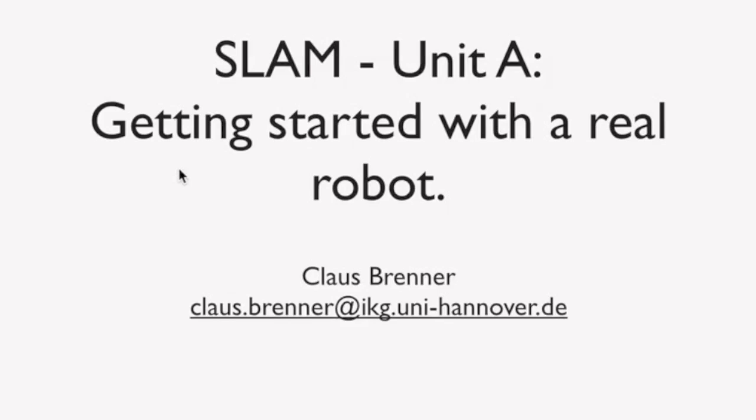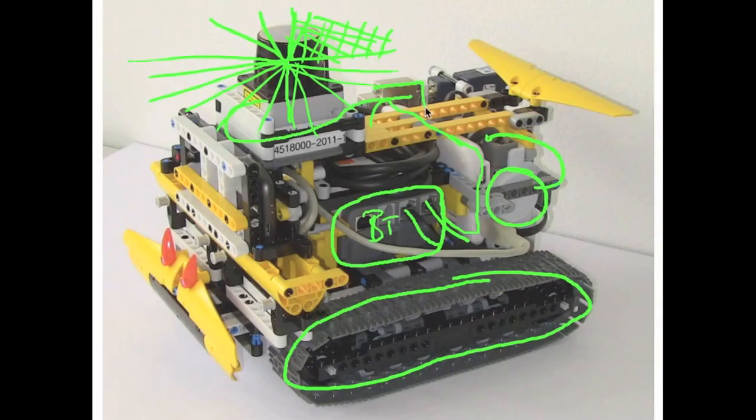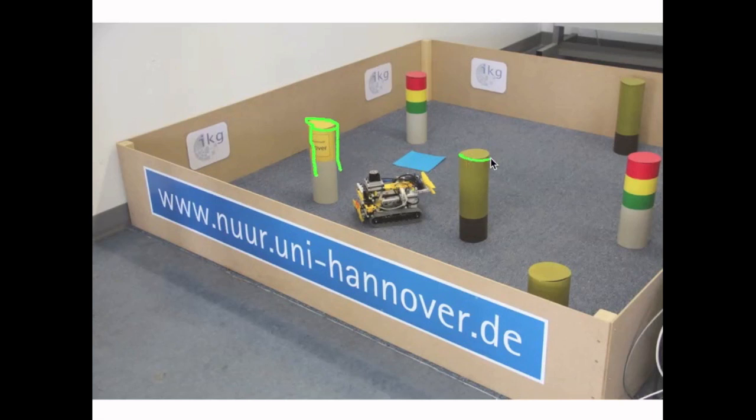Now let's have a look at what you learn in each unit. In unit A we will introduce our robot and the LiDAR scanning sensor and our arena containing cylindric landmarks.